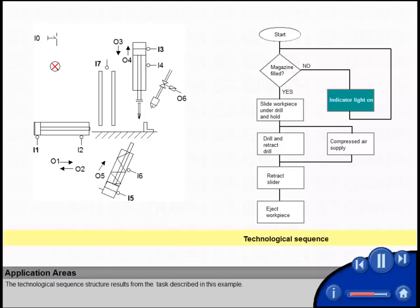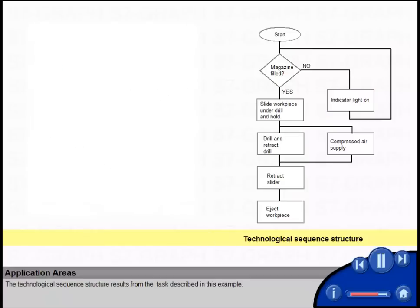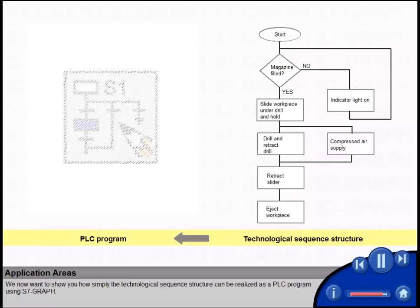The technological sequence structure results from the task described in this example. We now want to show you how simply the technological sequence structure can be realized as a PLC program using S7-GRAPH.